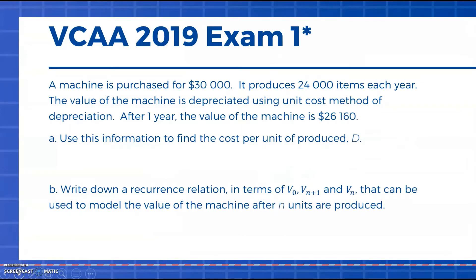This first example is a modified question from exam one last year. A machine was purchased for $30,000 and it produces 24,000 items a year. The value of the machine is depreciated using the unit cost method and after one year the value of the machine is $26,160. The first things we want to do is identify what are those key values in the question. We're given our initial value, information about units per year, and then the value of the machine after one year.